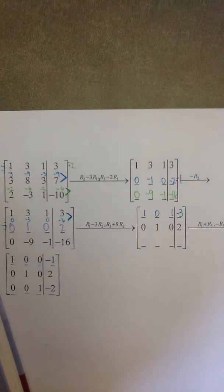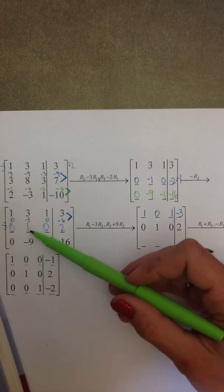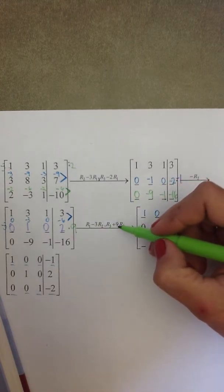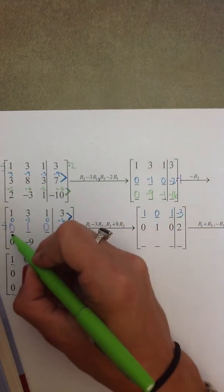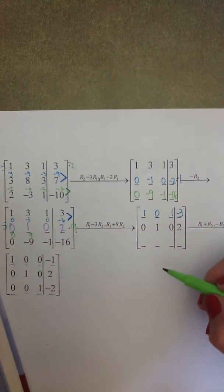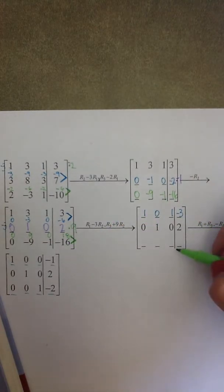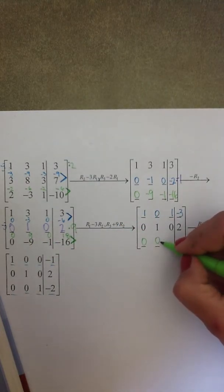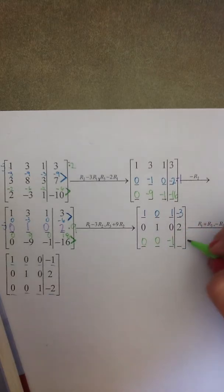We also need to change that negative nine into a zero. The opposite of negative nine is nine, so I multiply row two by nine. Nine times zero is zero, nine times one is nine, zero again, and eighteen. Adding those to row three: zero plus zero is zero, nine minus nine is zero — achieving the objective — zero minus one is negative one, and eighteen minus sixteen is two.